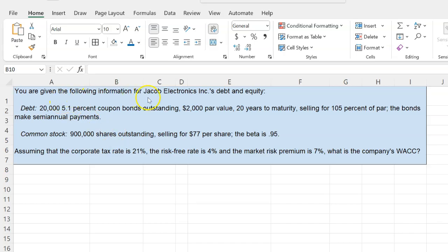Suppose you're given the following information for Jacob Electronics Inc.'s debt and equity. You're told that the firm has 20,000 5.1% coupon bonds and that the par value of each bond is $2,000. What that means is that on an annual basis, each bond pays you 5.1% of the $2,000 par value. On top of that, you're told that the bonds are going to mature in 20 years, which means that after 20 years, you are going to receive $2,000, which is the par value of the bond as well. And you're further told that the bonds are selling for 105% of par value, so basically $2,100.